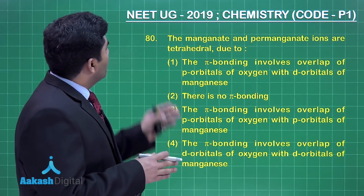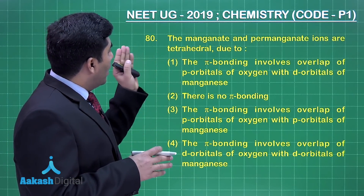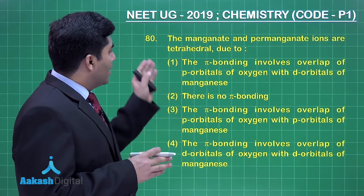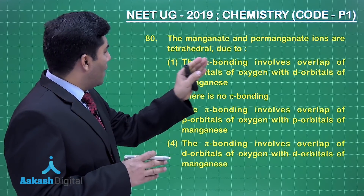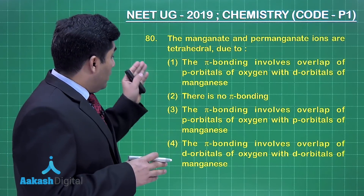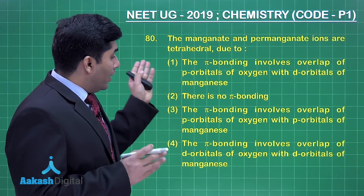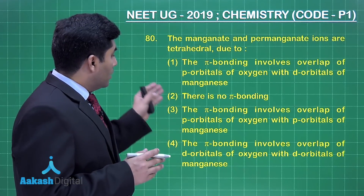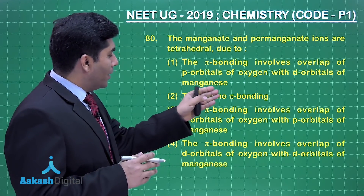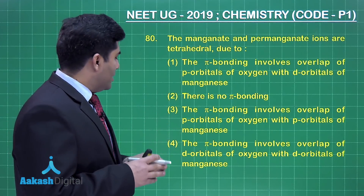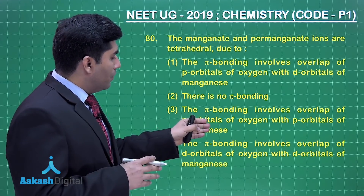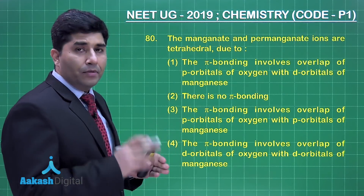The next question asks why manganate and permanganate ions are tetrahedral. Four options are given: option one says pi bonding involves overlap of p orbitals of oxygen with d orbitals of manganese; option two says there is no pi bonding; option three says pi bonding involves overlap of p orbitals of oxygen with p orbitals of manganese; option four says pi bonding involves overlap of d orbitals of manganese with d orbitals.